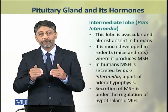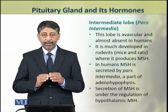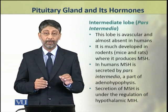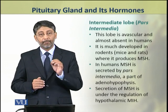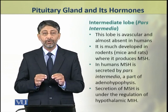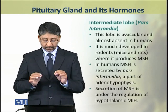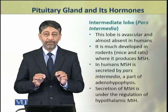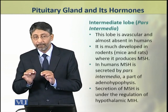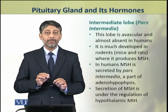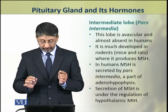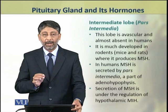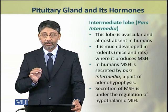The intermediate lobe of the pituitary is avascular, i.e., without high blood supply, and is almost absent in humans. However, in rodents and many lower vertebrates, this lobe is highly developed and produces the hormone MSH. In humans, MSH is secreted by the pars intermedia, which is considered part of the anterior pituitary. Its secretion is under the regulation of hypothalamic MIH, the inhibiting hormone for melanocytes.